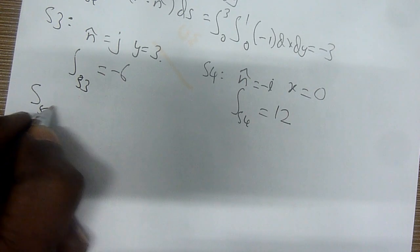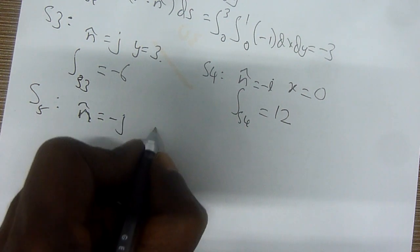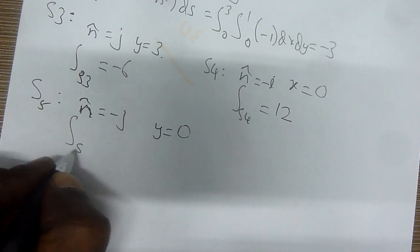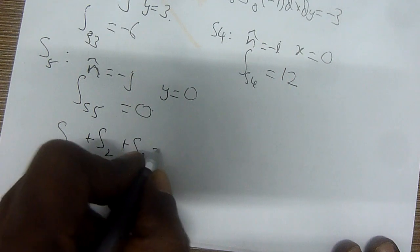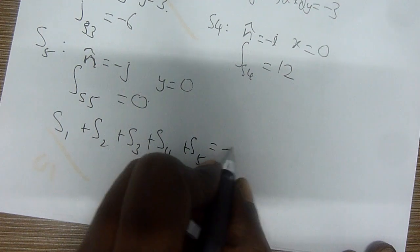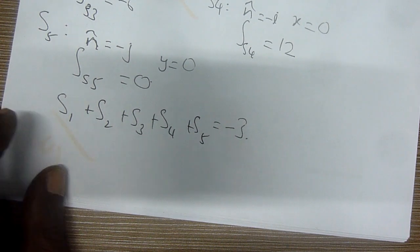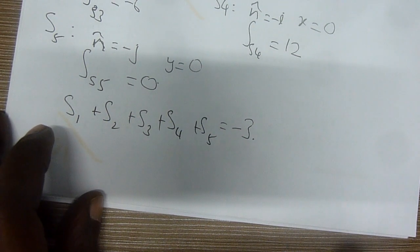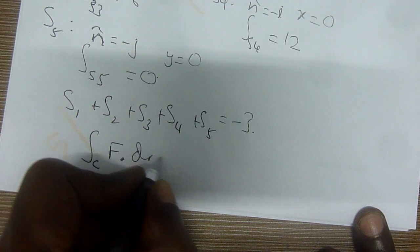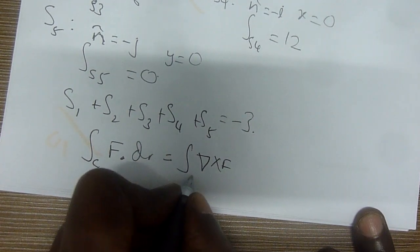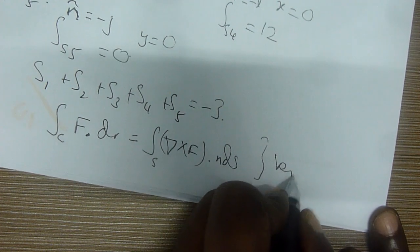What about S5? The normal is negative j, y equals 0, and the overall S5 equals 0. So, S1 + S2 + S3 + S4 + S5 — you get negative 3. Now you can see how to verify: you need to show both sides are the same. Based on the surface integral with n dS, it's the same — therefore it has been verified.